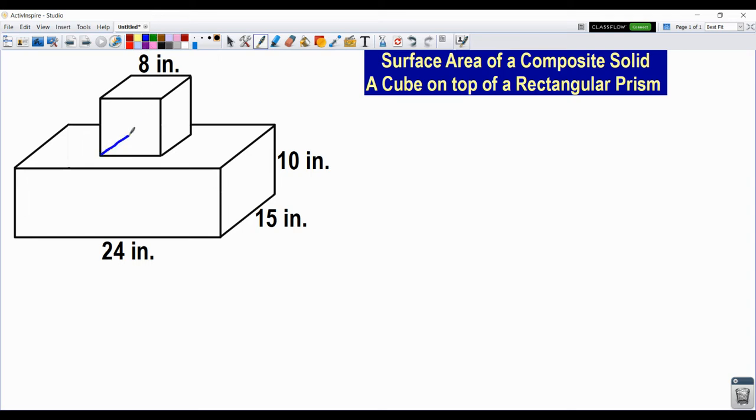So I'm going to use my pen here to outline. That's where the bottom of our cube would be, and that's what's attached to the rectangular prism. So if I were painting the outside of this, the bottom of this cube would never get any paint. So I have to keep that in mind as we find the surface area of this composite solid.